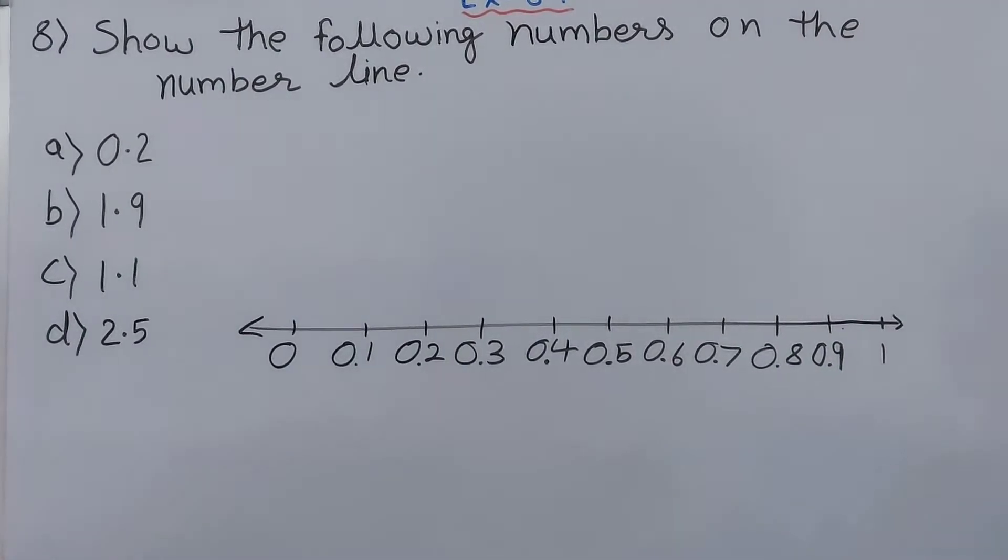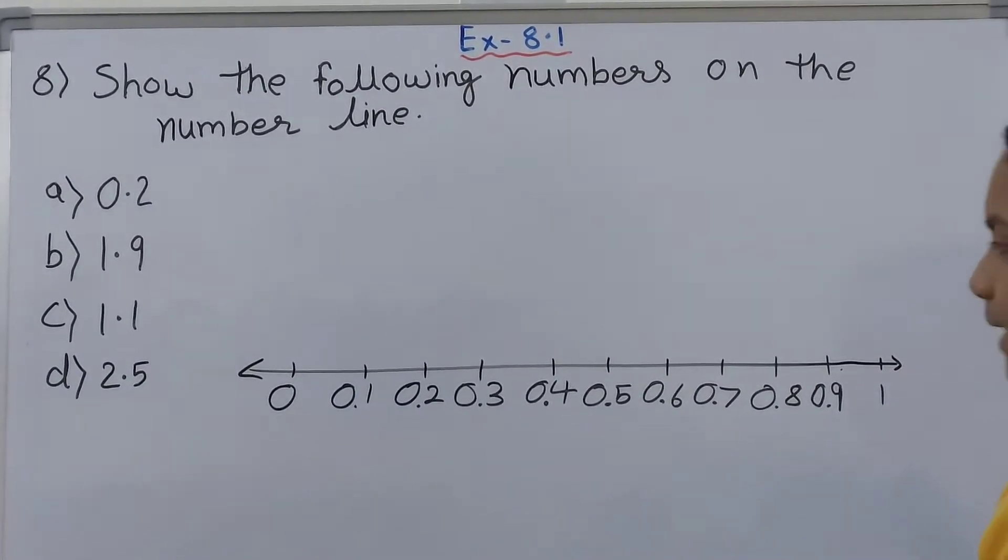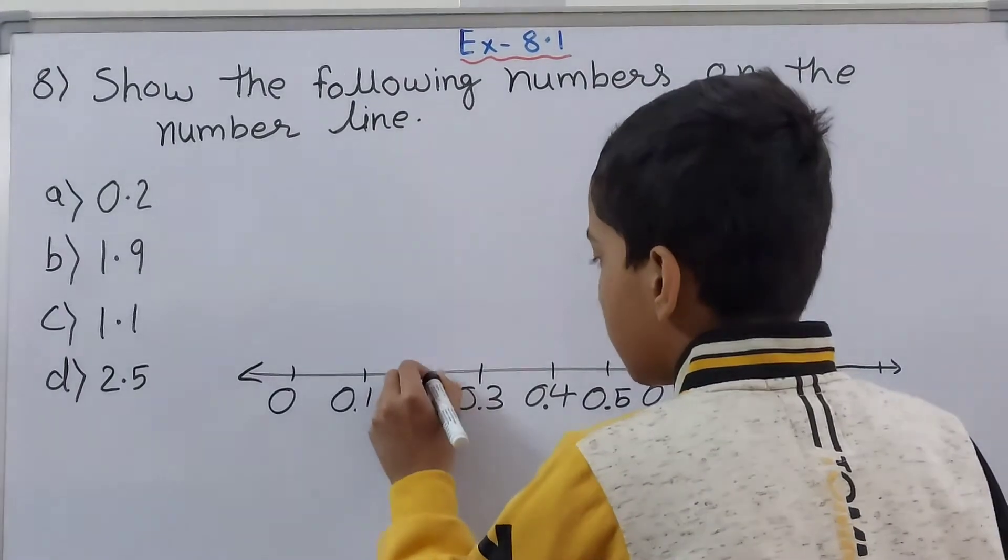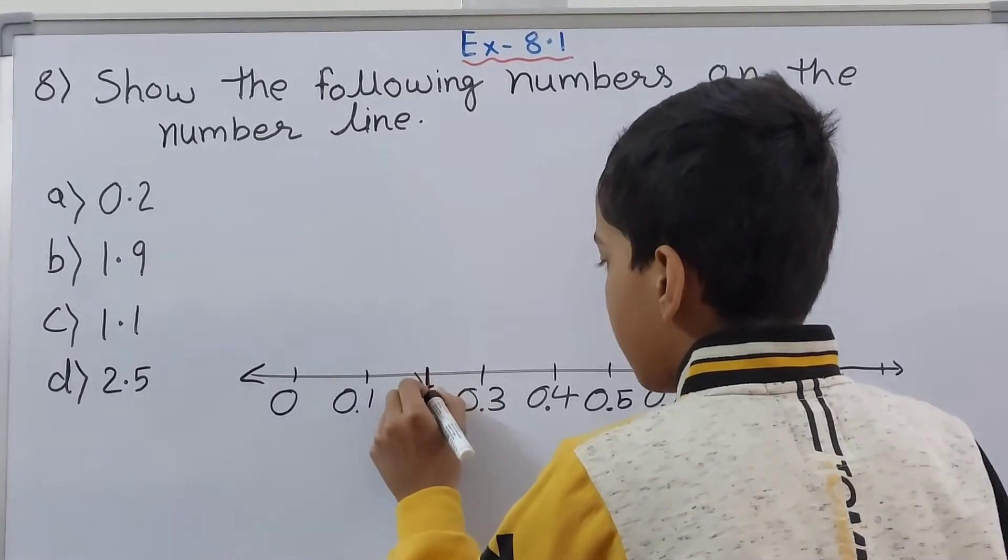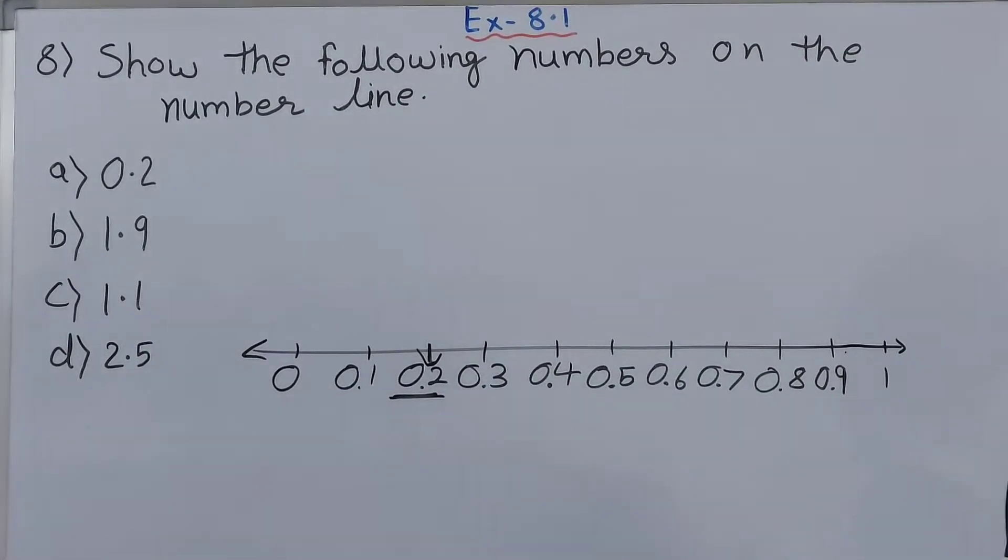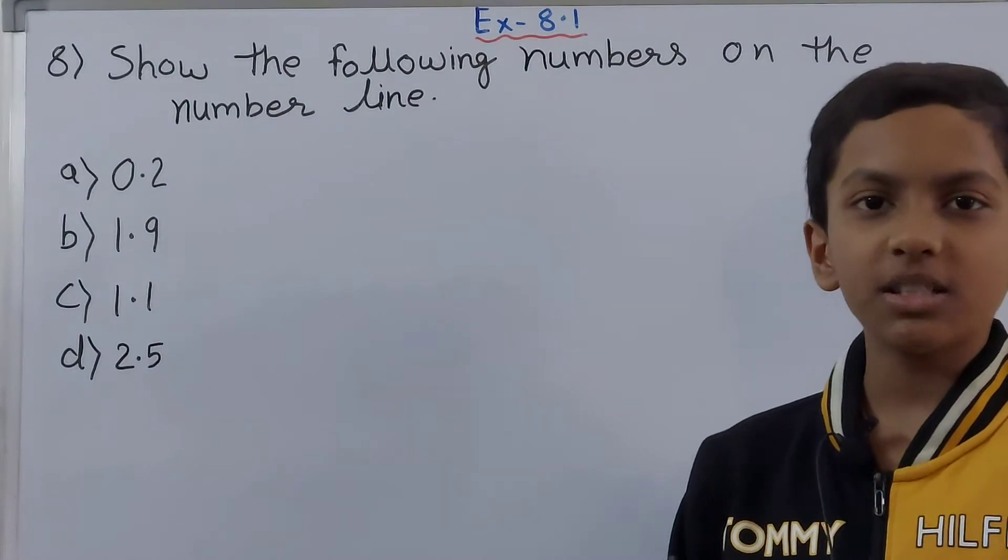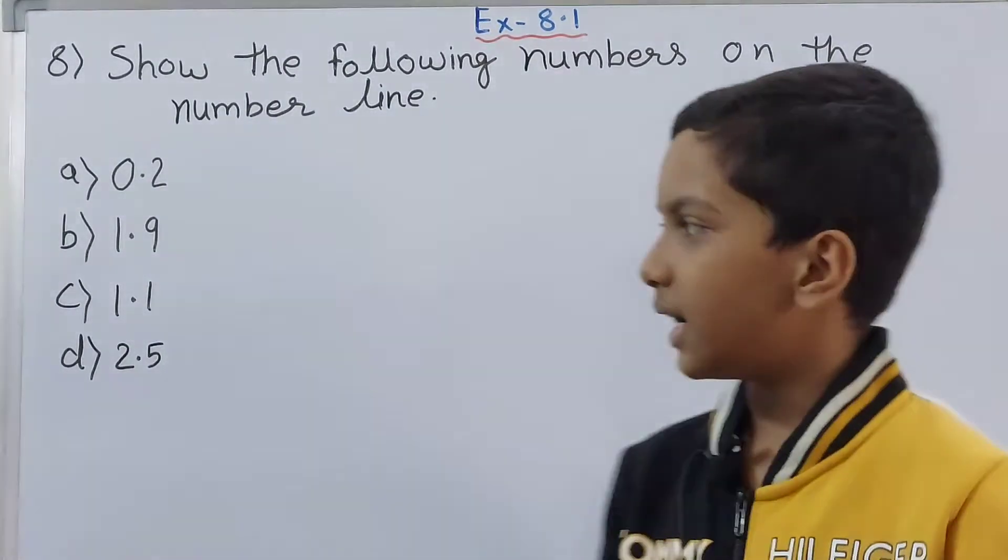Now our number line is made. Let's see where does 0.2 lie. Over here you can see we have found 0.2 which is this. This is how you can locate 0.2 on a number line. So friends, now let us move on to the B part.